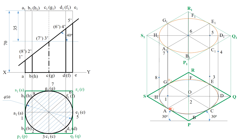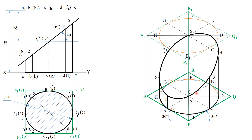You have transferred all the section points from your orthographic view into your isometric view. Now, as the last step, connect all these section points using a smooth freehand curve. Highlight the remaining portion of the solid and hatch the section area. This completes the problem — we have arrived at the isometric view of the truncated cylinder. Thank you.